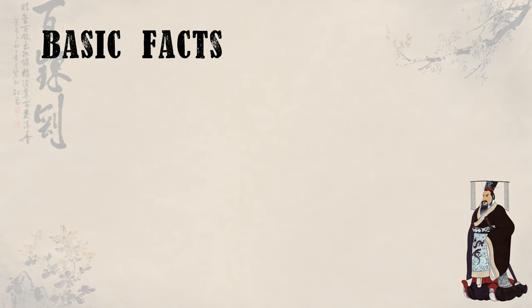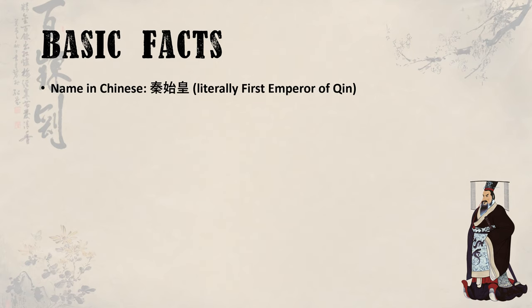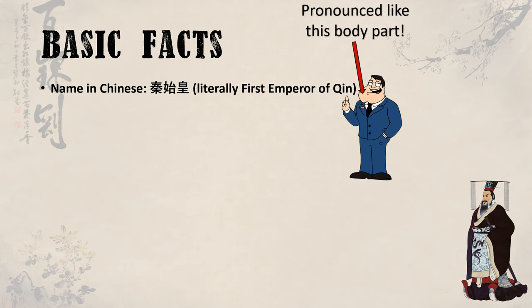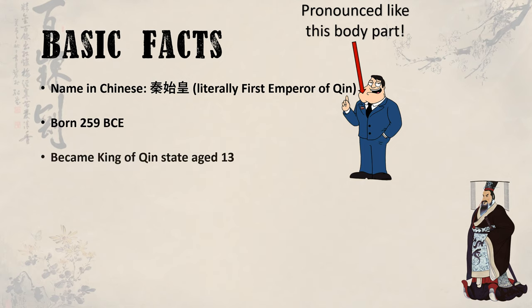Some basic facts about the first emperor of China. His name literally translates to 'first emperor of Qin.' For those having trouble remembering how to pronounce it, think about the 'Qin' on our faces and you've got it pretty close. Qin was born in 259 BCE with the name Zheng. His father was the king of the Qin state, and after his death, Qin became the king of Qin at just 13 years old. This was in a time in China's history known as the Warring States period, which ran from 475 BCE to 221 BCE.